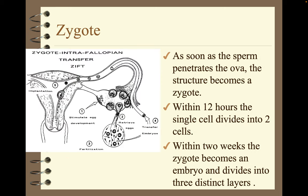As soon as the sperm penetrates the ova, the structure becomes a zygote. Within 12 hours, the single cell divides into two cells. Within two weeks, the zygote becomes an embryo and will divide into three distinct layers.